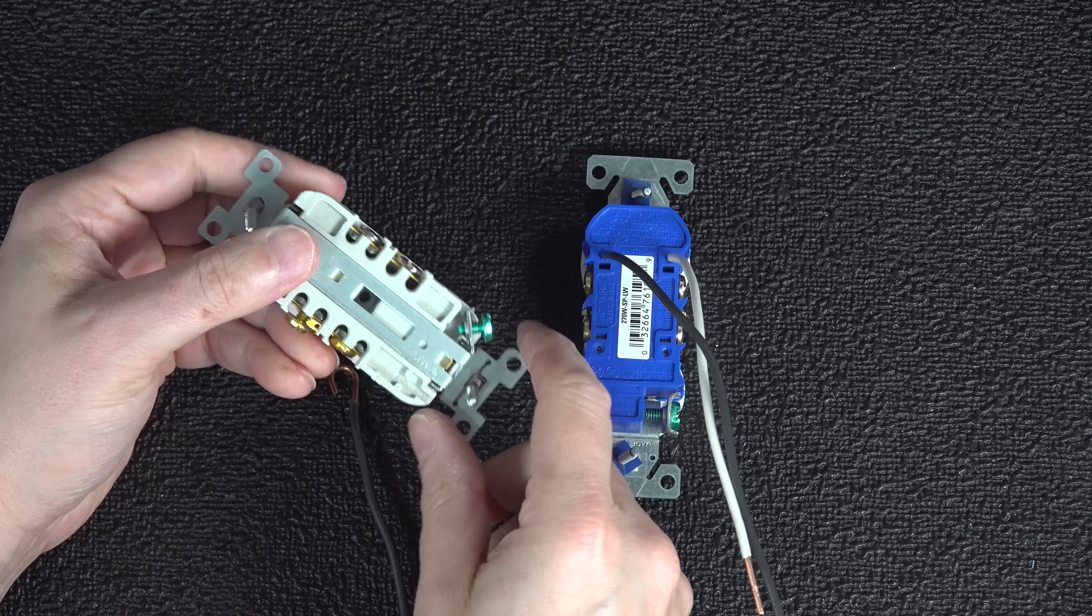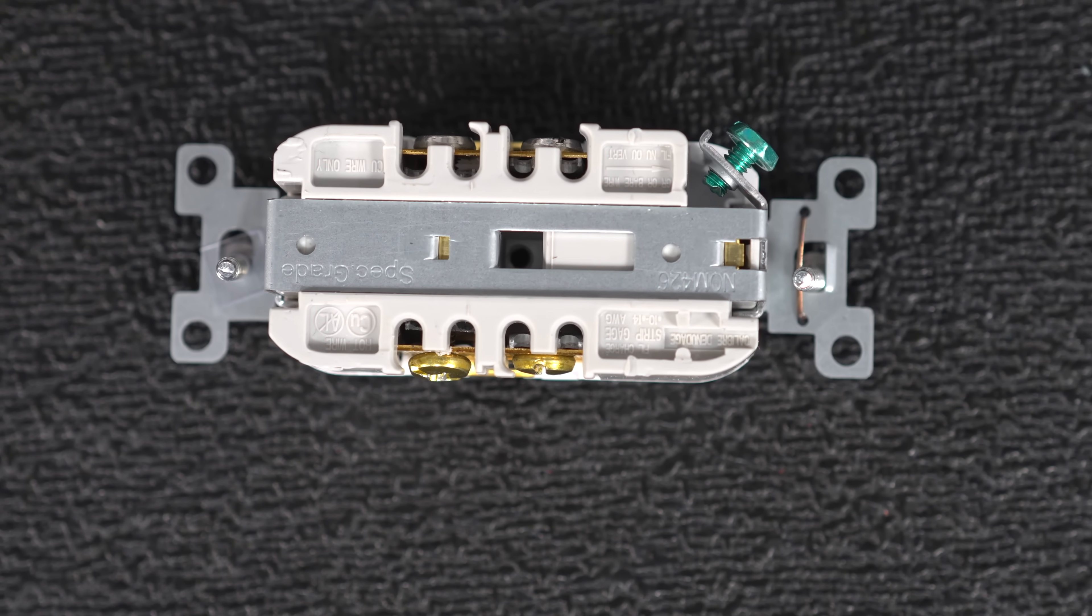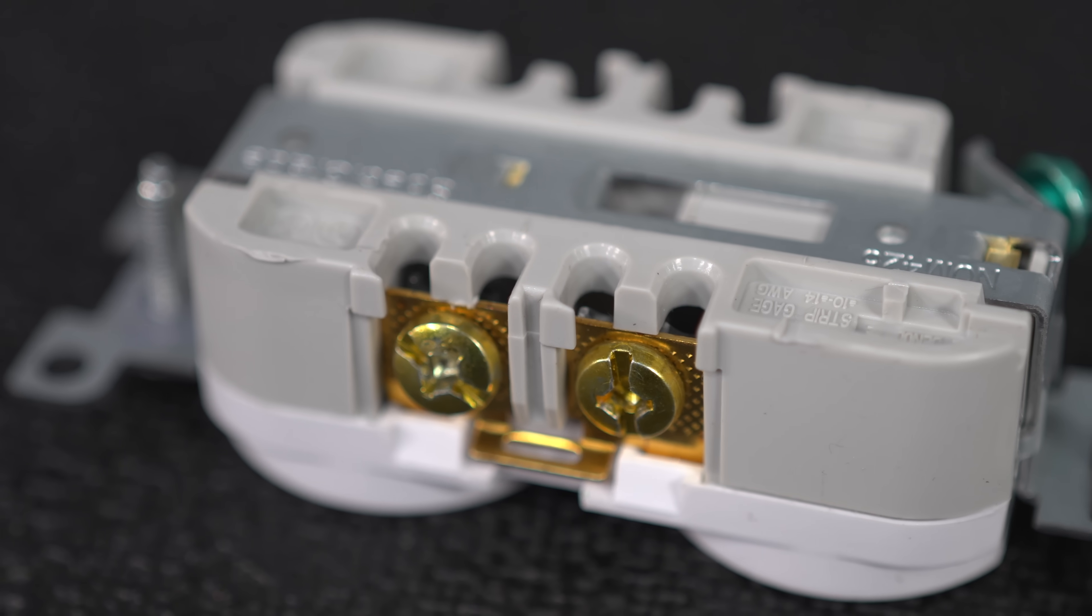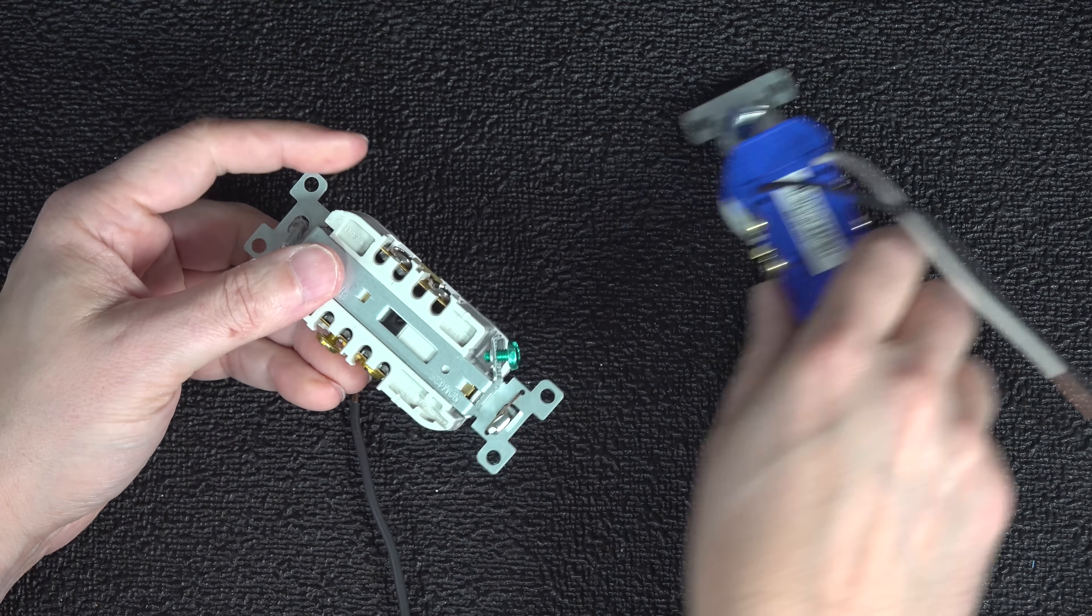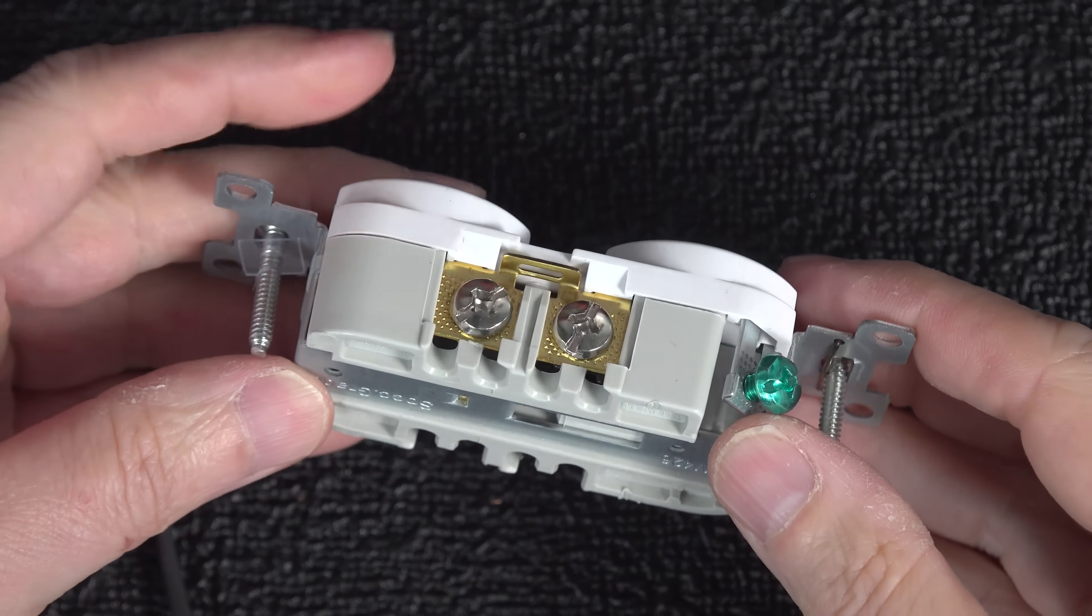When you flip it over you're going to notice it doesn't have those back wiring holes but it does have these small channels. Years ago hospital grade outlets used to have channels like these but those outlets could cost over $20 a piece. This is a typical outlet you can get at Lowe's or Home Depot and it costs about 50 cents more than a regular outlet.